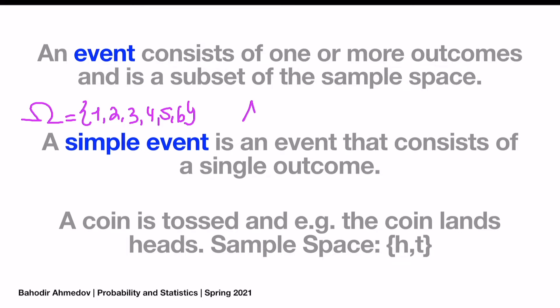Let's say event A, which is a subset of the sample space, contains just the number 1. Or event B, which is also a subset of the sample space, contains only 5. Those numbers — 1 or 5 — are taken from the sample space. These are simple events, containing only a single item. But there might be complicated events as well, like event C, which contains two numbers: 3 and 4. So A and B are simple events, and C is a complicated event.